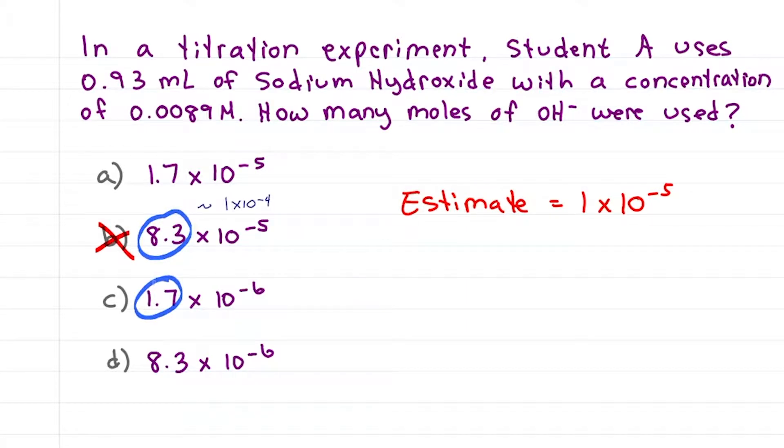1.7 rounds to one times ten to the minus six, which is the wrong exponent. And again, 8.3 rounds to ten times ten to the minus six, or one times ten to the minus five. And so we're left with two choices that both round to our estimated value of one times ten to the minus five. So which one is it?